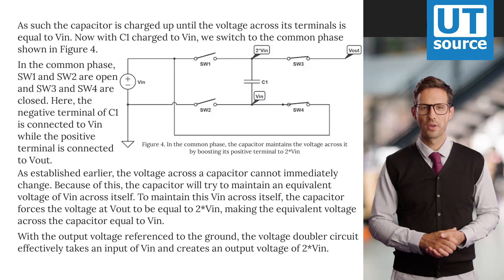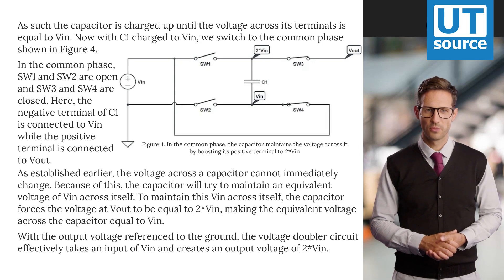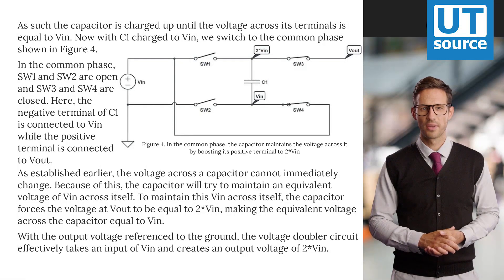As such, the capacitor is charged up until the voltage across its terminals is equal to VIN. Now with C1 charged to VIN, we switch to the common phase shown in Figure 4.